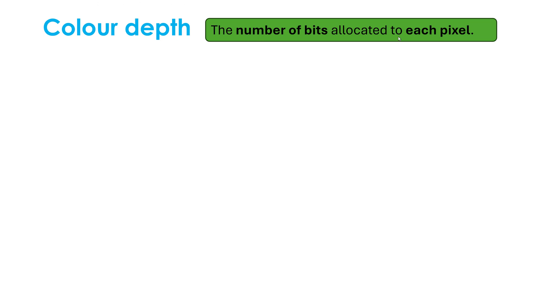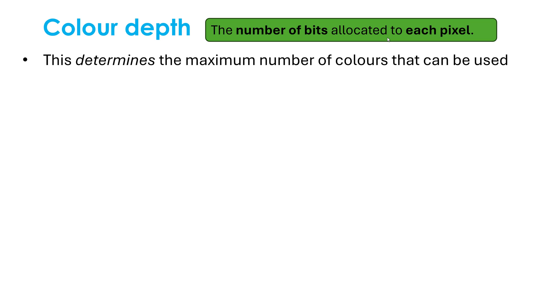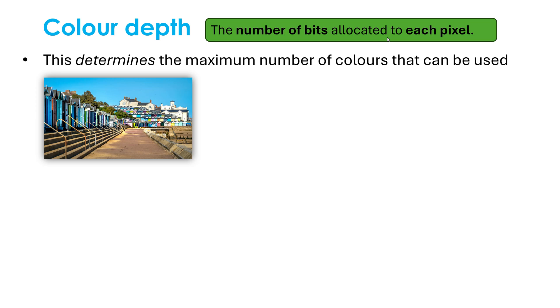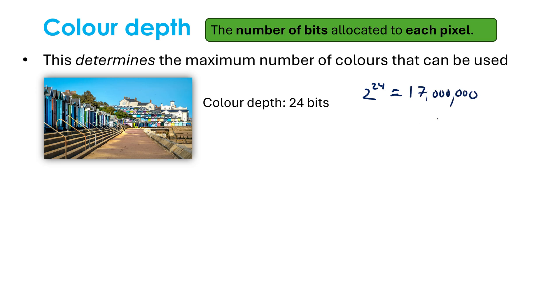Color depth is another important term and is independent of resolution — students often find this confusing. Color depth is not the number of colors an image has. The color depth is the number of bits allocated to each pixel — how long is the binary number given to each pixel? By definition it has nothing to do with colors directly, however the color depth does determine the maximum number of colors that can be used. Higher color depth means more colors. Typically images use around 24 bits as a color depth, and 2 to the power 24 gives us around 17 million possible colors.